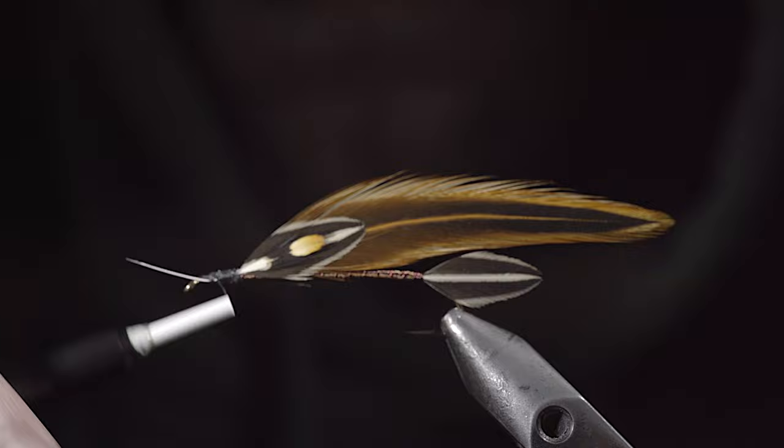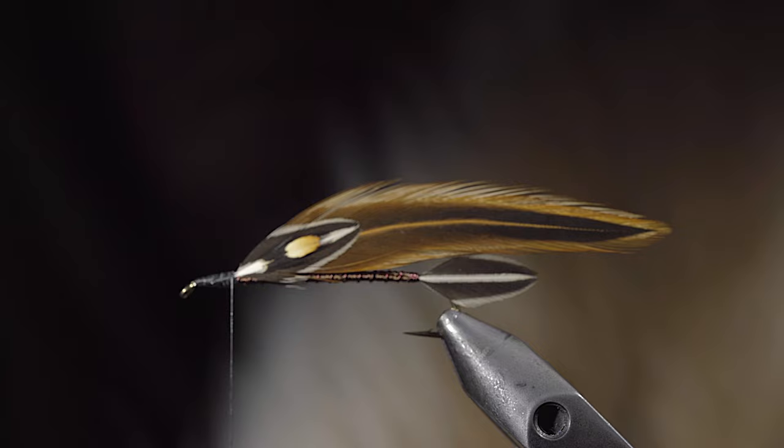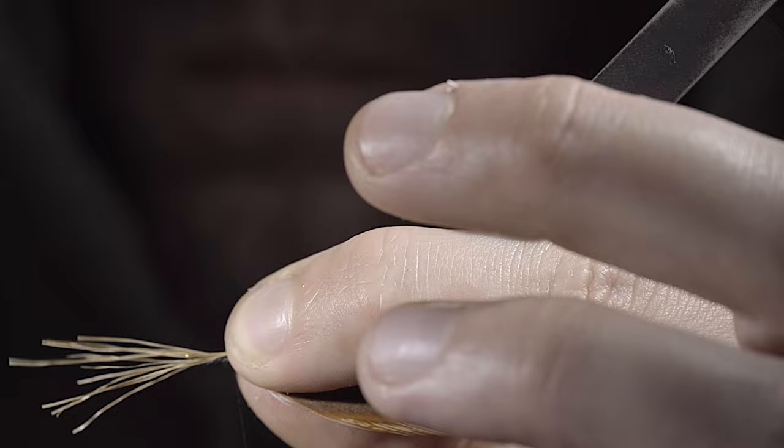Snip your excess free, clean up the head, and grab a deer tail. Here I've selected to use a natural color, grabbing the tan fibers from the back side of the tail. Select a small clump and secure it to the bottom of your fly. Snip your excess free and clean up the head of the fly.